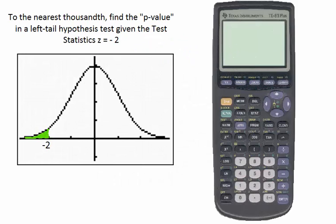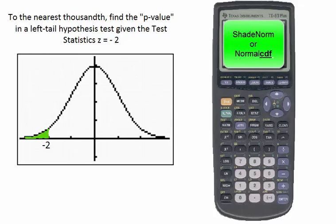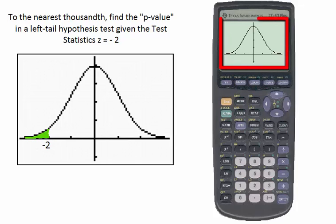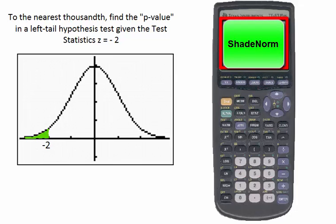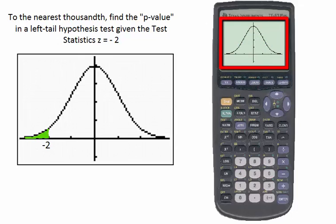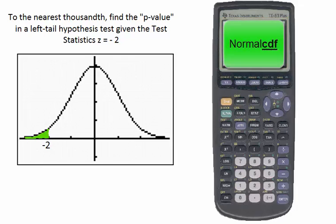Since we're using the TI-83 or TI-84 graphing calculator, we can find the area under the curve using either the shade normal function or the normal cumulative density function. Using the shade normal function would show us the curve and the area under the curve to the left of negative 2.